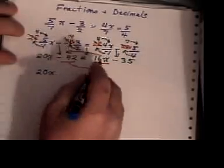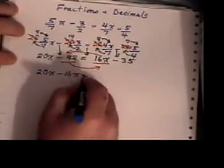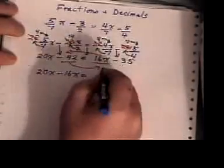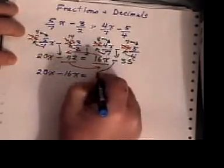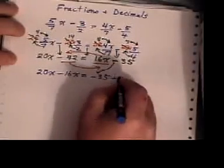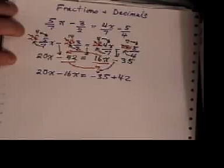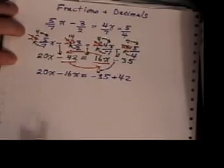20x is here. Plus 16x becomes minus 16x. We have a minus 35 there. Please don't forget the minus sign. Minus 42 becomes plus 42. The only mistake you'll probably make here is you'll forget to change the sign when things cross the border.